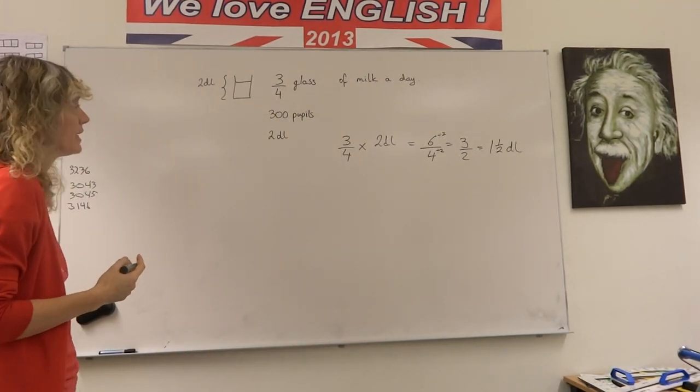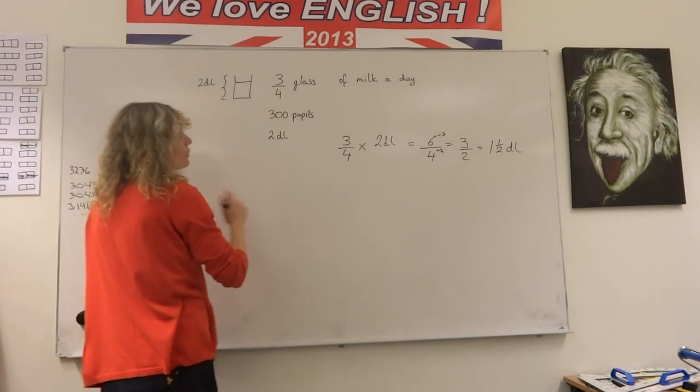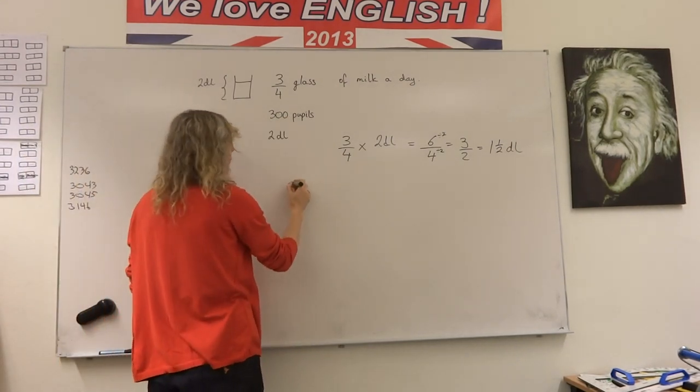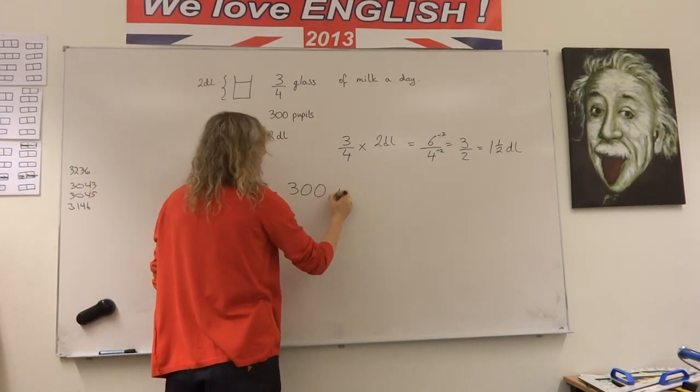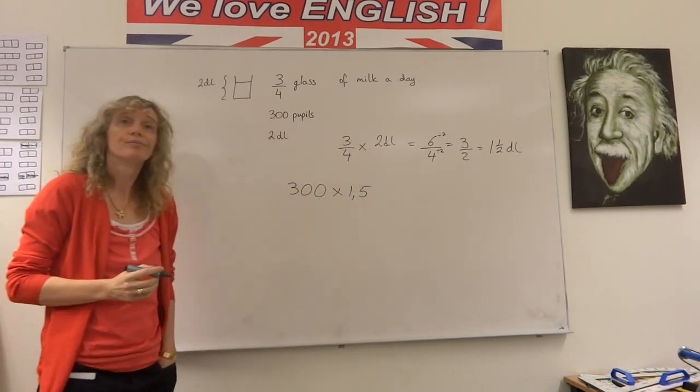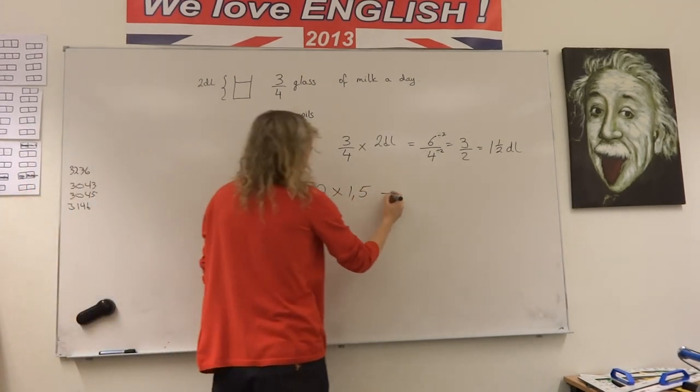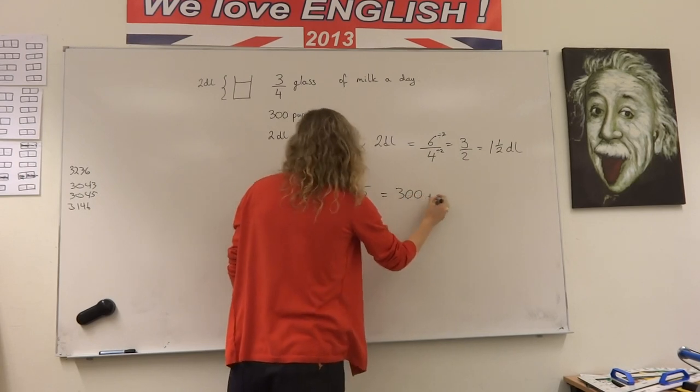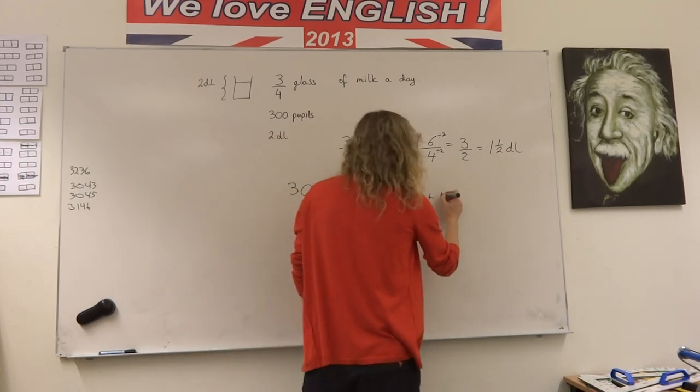We have 300 pupils, so the amount that 300 will be drinking is 300 times one and a half. 300 times one is 300, 300 times a half is 150.